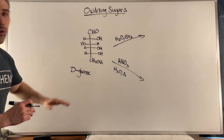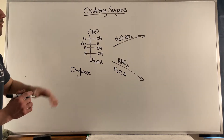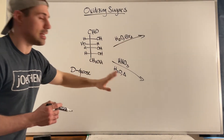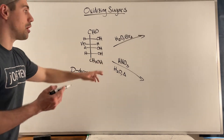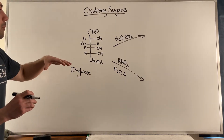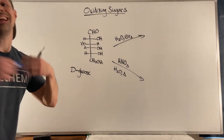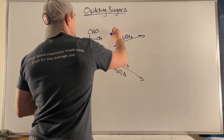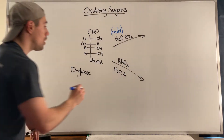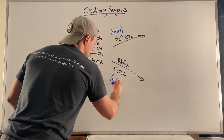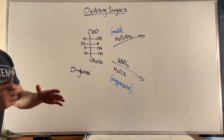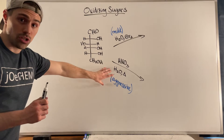We're going with our tried and true friend D-glucose. You can see we have H2O and BR2 as well as nitric acid, water, and heat. Sometimes you might just see HNO3 — don't get thrown off if you're missing the water and the heat. When you see H2O and BR2, think of this as a mild oxidation. When you see HNO3 with H2O and heat, think of this as an aggressive oxidation. Both give you a carboxylic acid — mild gives you one, aggressive gives you two.